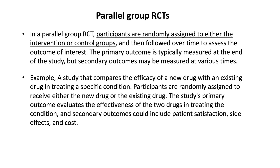In a parallel group RCT, participants are randomly assigned to either the intervention or control groups, and then followed over time to assess the outcome of interest. The primary outcome is typically measured at the end of the study, but secondary outcomes may be measured at various times.